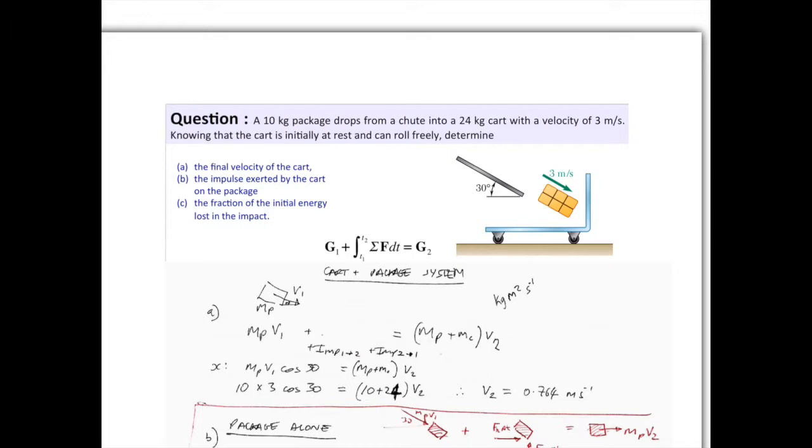In this example, you've got a 10kg package dropping from a chute into a 24kg cart. The package drops with a velocity of 3m/s, and you can assume that it has 3m/s at the instant just before contact with the cart, so there's no extra velocity to be gained from the final drop.